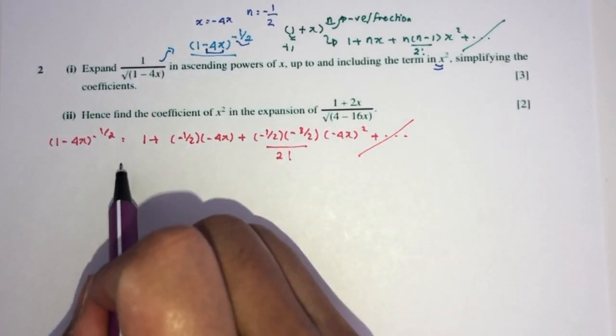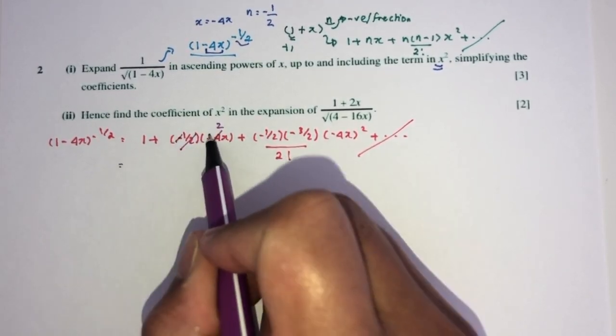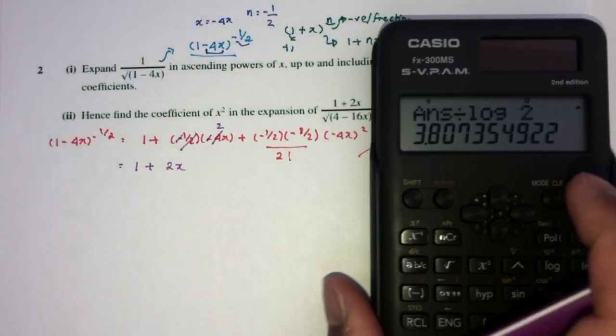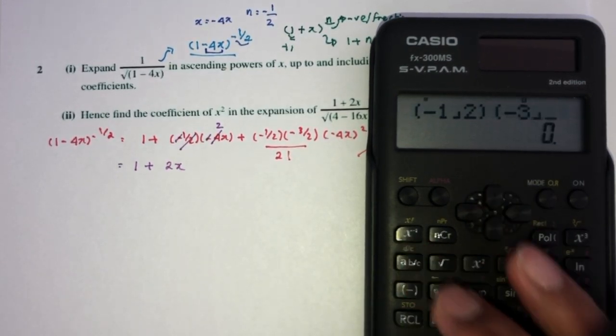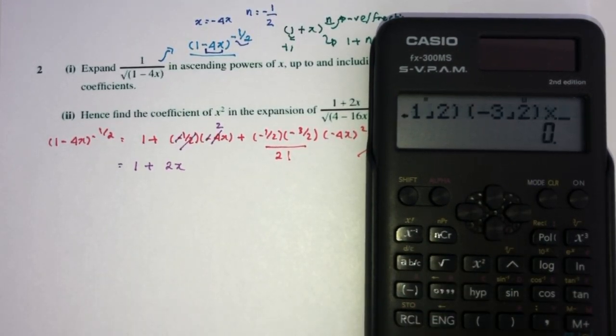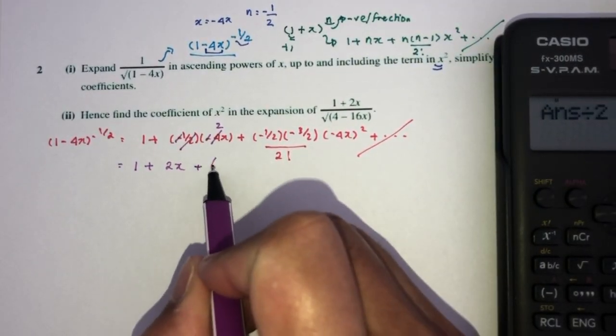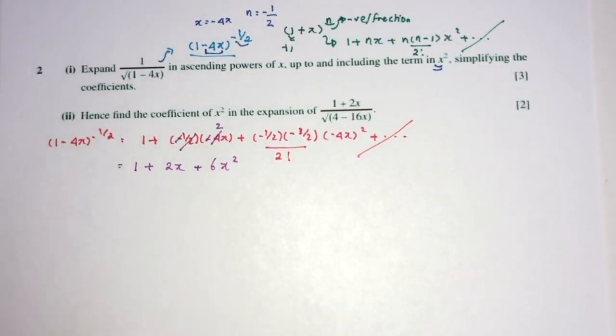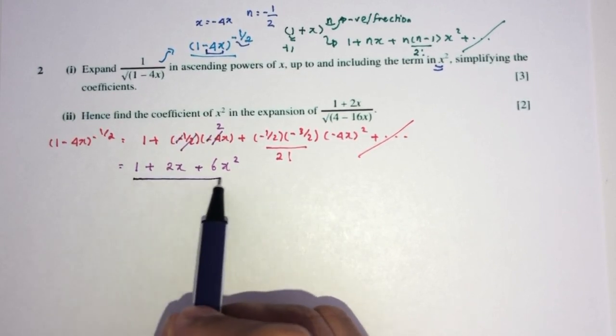Now, simplify. This will cancel out with this. And this will cancel out with this. So you have 1 plus 2x. How about this one? Let's use your calculator. Minus 1 over 2 times minus 3 over 2 times 16 divided by 2 factorial, which is just 2. That will be 6. So plus 6x squared. Here you go. The idea is we were able to expand this into this. That is part 1 done.